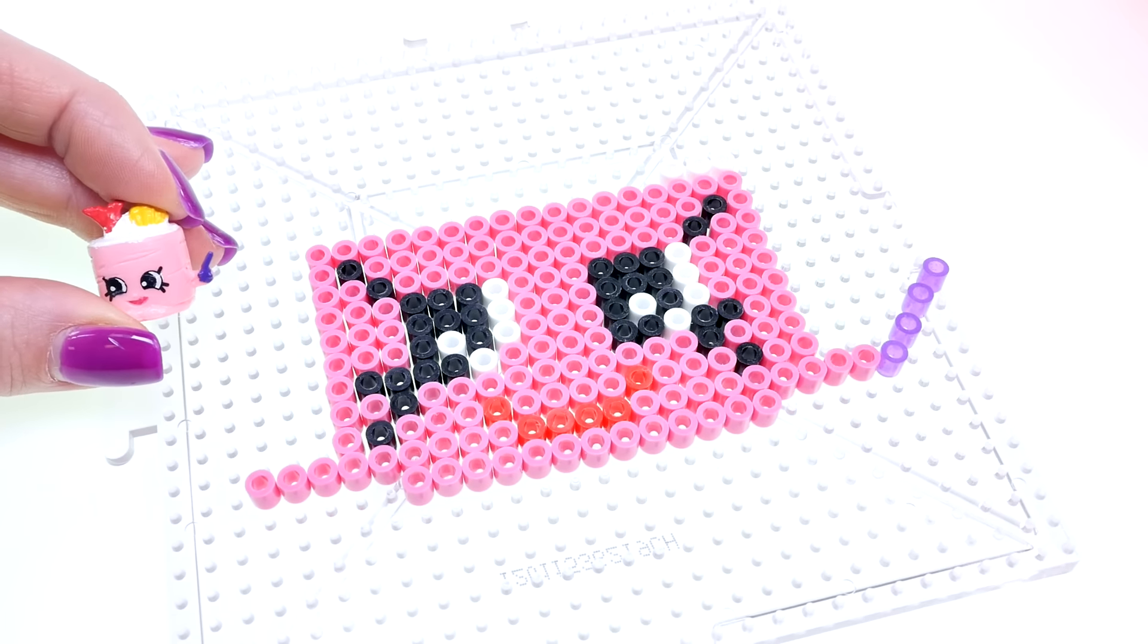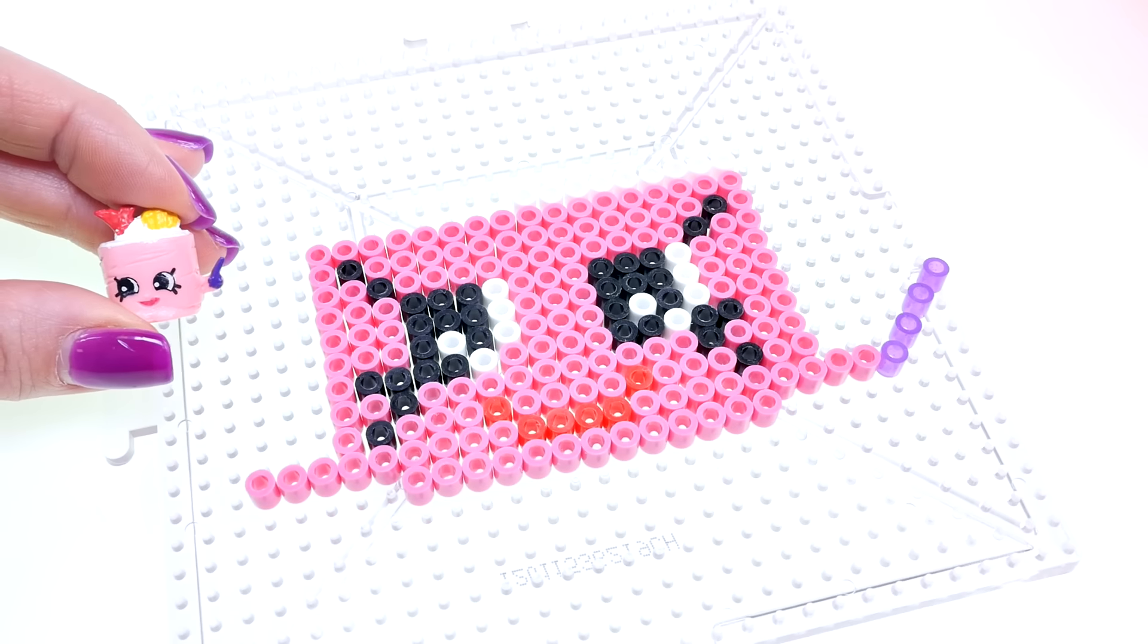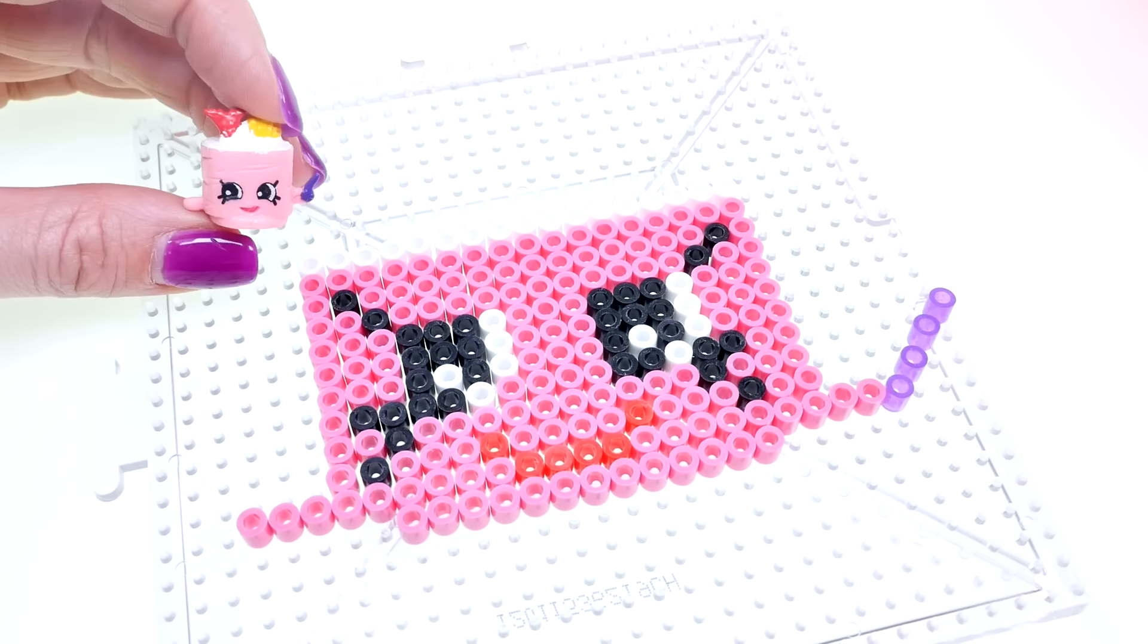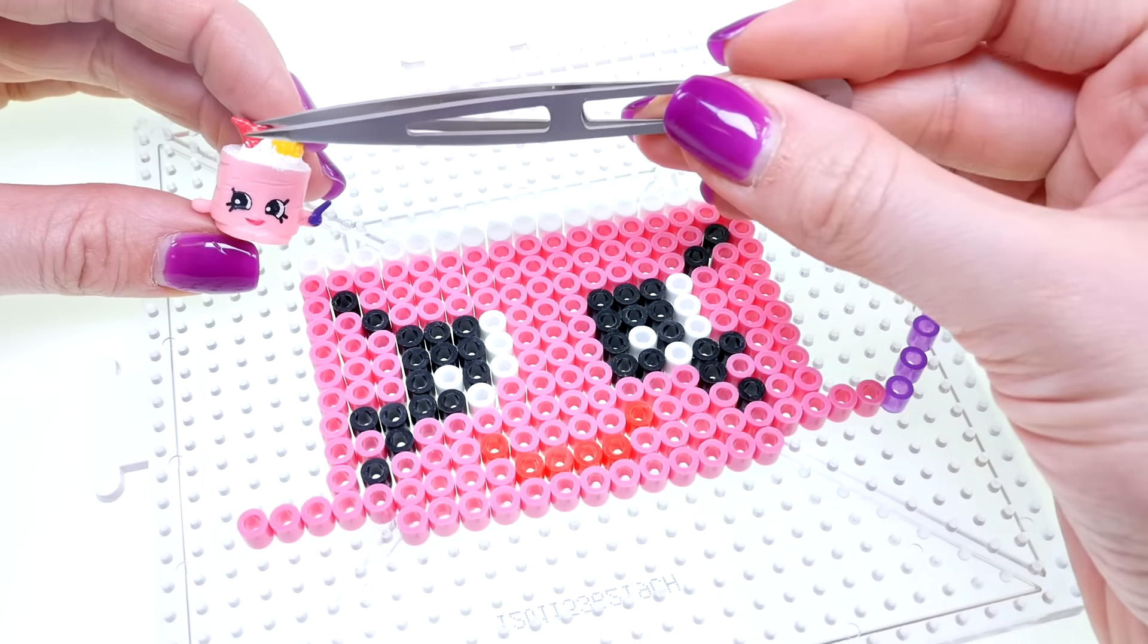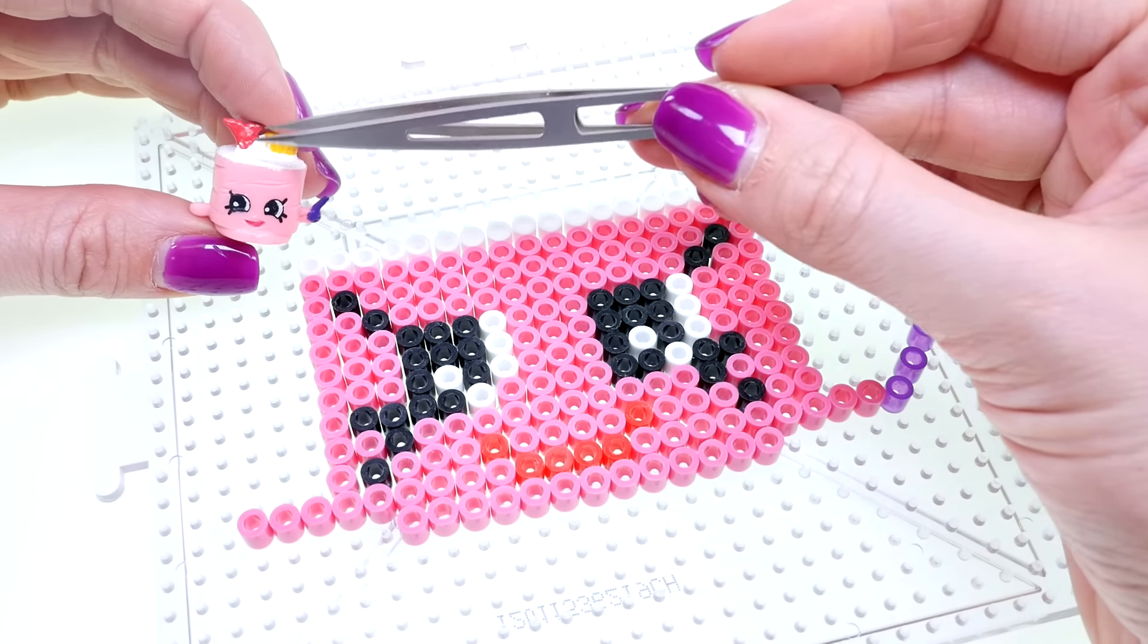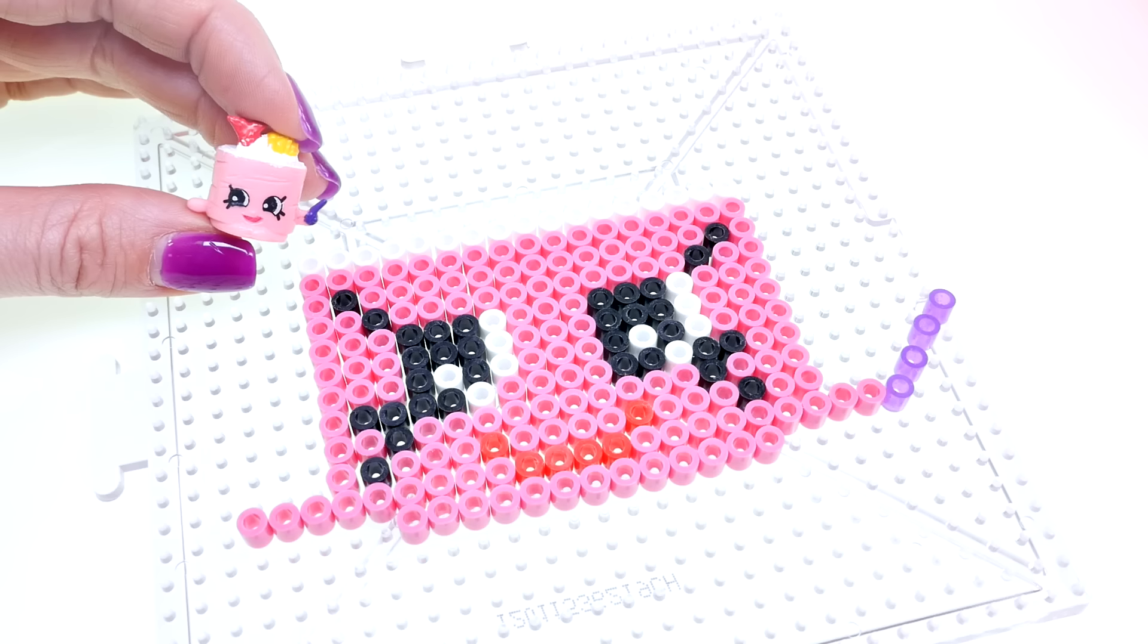Now I'm going to make the little red tail right here on the left, so I'm going to use some red beads.